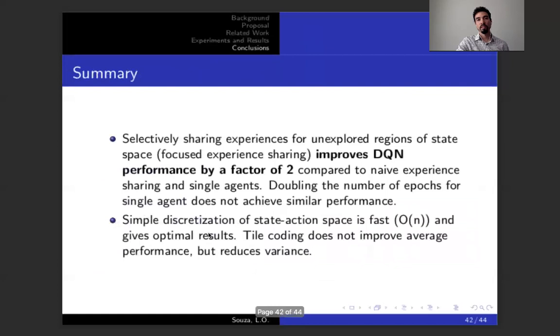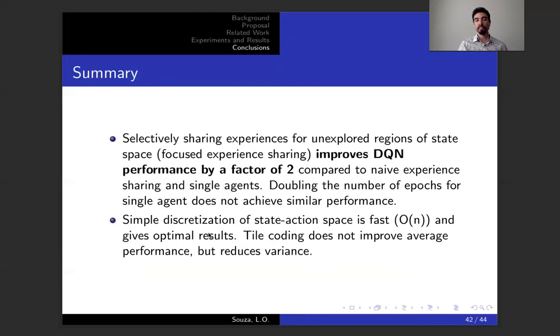The conclusion we have is that selectively sharing experiences for unexplored regions of the state space, which we call focus experience sharing, improves DQN performance by a factor of two, as we've seen in the cart pole, and in Malmo using the DQN PR, compared to naive experience sharing and compared to single agents. Doubling the number of epochs for single agent doesn't achieve similar performance, so it's not just a matter of training more. You actually have the benefits of these varied policies from agents exploring different regions of the space.